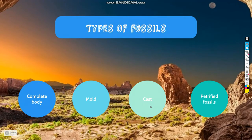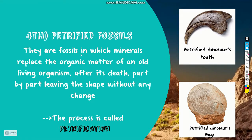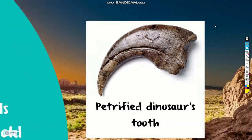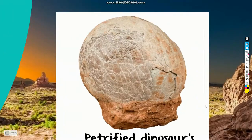The last type of fossil is the petrified fossil. These are fossils in which minerals like silica replace the organic matter of an old living organism after its death, part by part, leaving the shape without any change. This process is called petrification. Examples include the petrified tooth of a dinosaur or the petrified egg of a dinosaur.